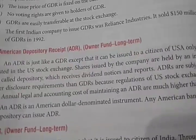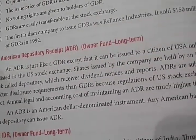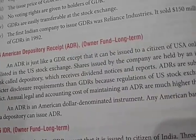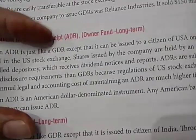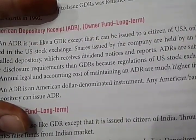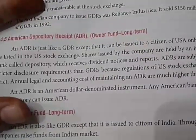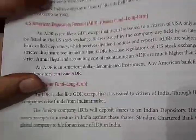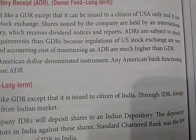Next is American Depository Receipt (ADR). ADR is just like GDR, but it is only issued to the citizens of the USA and can be listed on the US stock exchange. Shares issued by the company are held by an international bank called a depository, which receives dividend notices and reports. ADRs are subject to much stricter disclosure requirements than GDRs because the regulations of the US stock exchange are very strict. The legal and accounting cost of maintaining ADR is much higher than GDR.